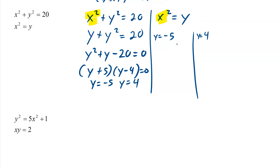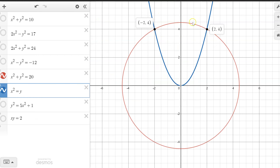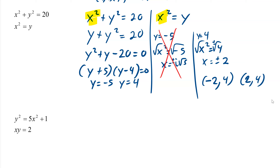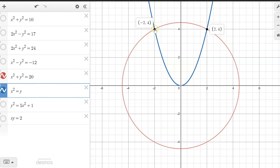For y equals negative 5: x squared equals negative 5, and taking the square root gives an imaginary number — i radical 5 — plus or minus. That's not going to show up, so we cross off the negative 5. We already knew it wasn't a solution from looking at Desmos. For y equals 4: x squared equals 4, square root both sides plus or minus, so x equals plus or minus 2. Our solutions are x equals negative 2 with y equals 4, and x equals positive 2 with y equals 4. Those were the solutions we had in Desmos — the parabola and circle both gave us these two points.